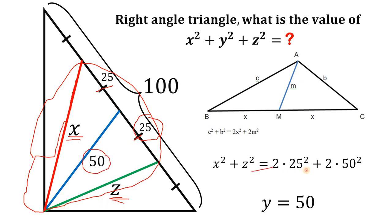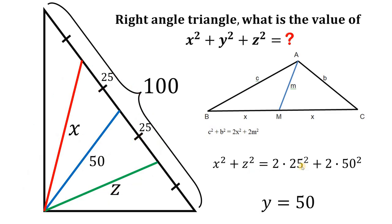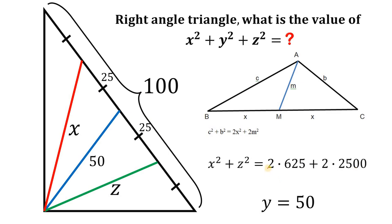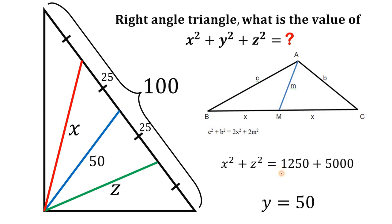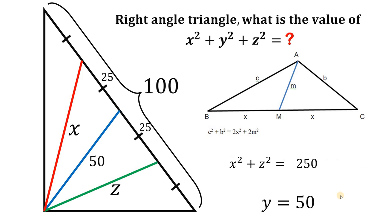Let's simplify. 25 squared equals 625, and 50 squared equals 2,500. Multiplying: 2 times 625 gives us 1,250, and 2 times 2,500 gives us 5,000. Adding 1,250 plus 5,000 gives us 6,250. So x squared plus z squared equals 6,250.